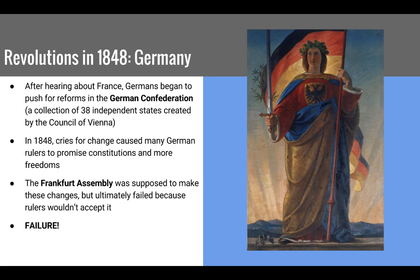Other countries looked at France and were inspired. In Germany, after hearing about France, Germans pushed for their own reforms within the German Confederation. In 1848, cries for change caused many German rulers in these principalities to promise constitutions and more freedoms. An assembly was established to push for these changes, but ultimately rulers didn't want to accept liberal reforms — they felt it would weaken their power — so they refused. This revolution fell flat and was a failure.